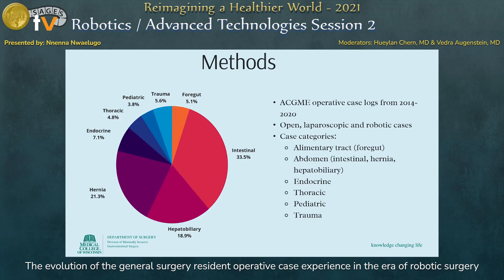For this study, the ACGME operative case logs of residents from 2014 to 2020 were analyzed to determine resident participation in open, laparoscopic, and robotic cases for three years prior to and three years after the institution of the curriculum. The six ACGME case categories included were alimentary tract, abdomen, endocrine, thoracic, pediatric, and trauma. We also further extrapolated foregut cases as a subset of alimentary canal, and intestinal, hernia, and hepatobiliary cases as subsets of abdominal cases to give a more detailed analysis of our operative case logs.